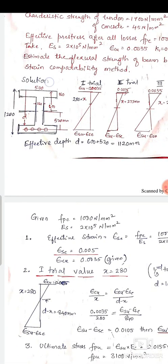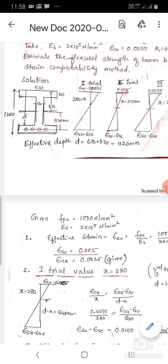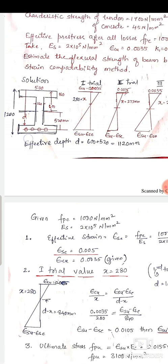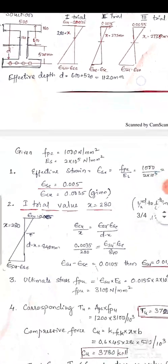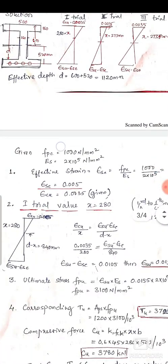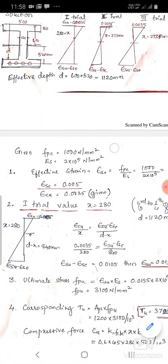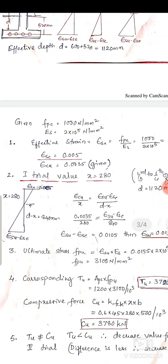It is a symmetrical I-section: flange width 500 mm, flange thickness 160 mm, web thickness 160 mm, eccentricity 520 mm, overall depth 1200 mm. The effective depth d is calculated as 600 + 520 = 1120 mm. f_pe and E_s are given.